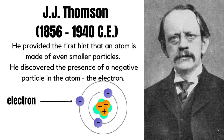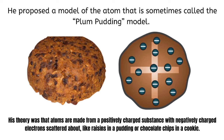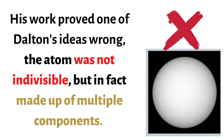In 1897, the English scientist J.J. Thomson provided the first hint that an atom is made of even smaller particles. He discovered the presence of a negative particle in the atom — the electron. He proposed a model of the atom sometimes called the plum pudding model. His theory was that atoms are made from a positively charged substance with negatively charged electrons scattered about, like raisins in a pudding or chocolate chips in a cookie. His work proved one of Dalton's ideas wrong: the atom was not indivisible, but in fact made up of multiple components.